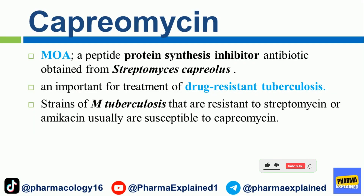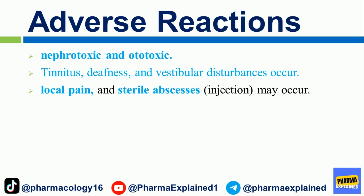Capreomycin is a peptide protein synthesis inhibitor antibiotic obtained from Streptomyces caprylicus and is important for treatment of drug-resistant tuberculosis. Strains of M. tuberculosis that are resistant to streptomycin or amikacin usually are susceptible to capreomycin. Adverse reactions: It is nephrotoxic and ototoxic; tinnitus, deafness, and vestibular disturbances occur. Local pain and sterile abscesses at the injection site may also occur.